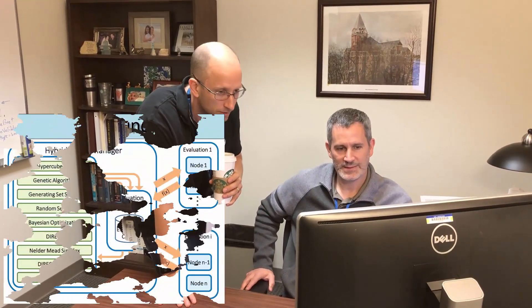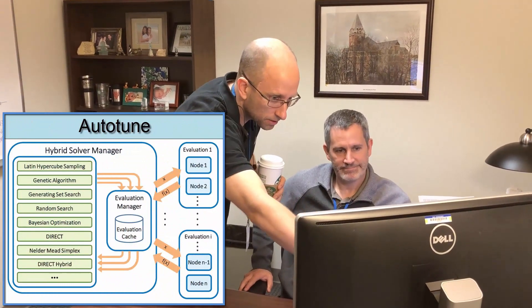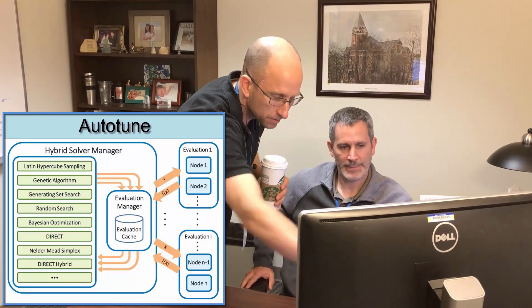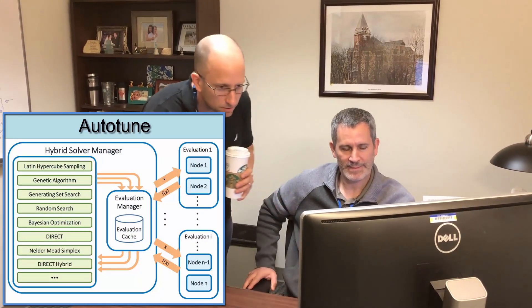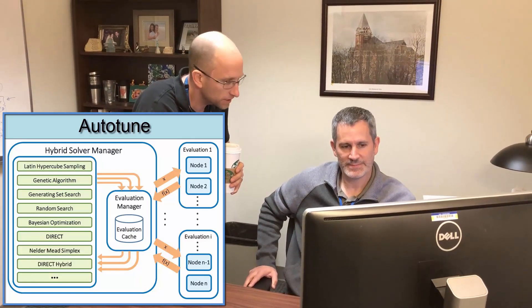But Josh explained that we could use a derivative-free optimization framework called Autotune that incorporated numerous search methods running concurrently in hybrid strategies to exploit the strengths of each to navigate complex spaces. And as a bonus, many of these methods, such as a genetic algorithm, could evaluate numerous candidate models in parallel to save time.